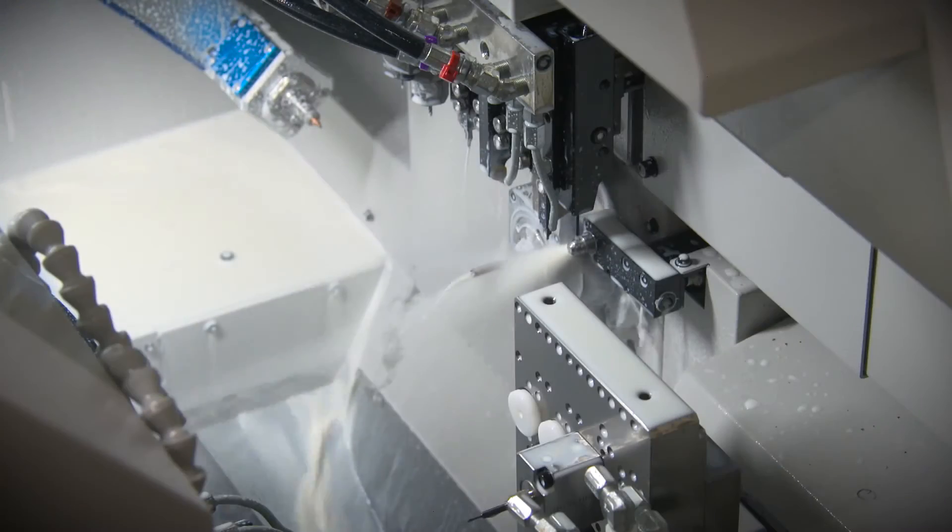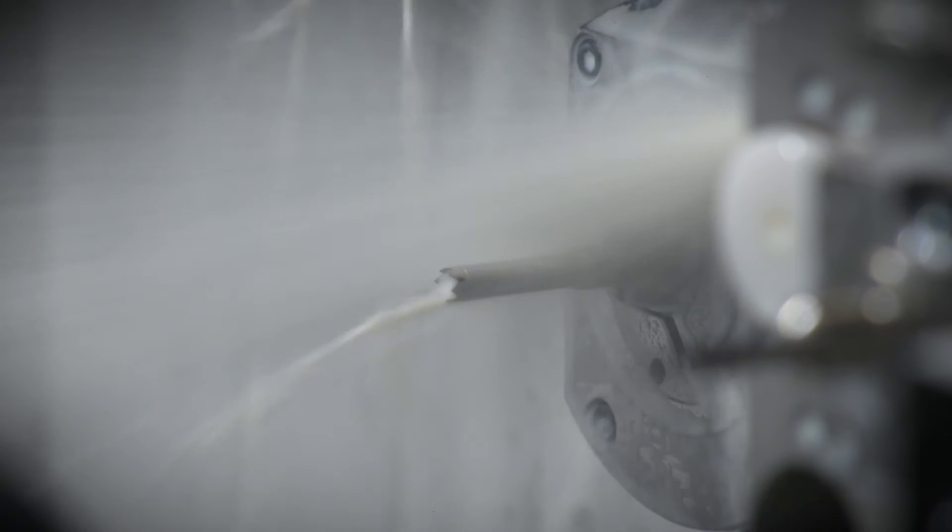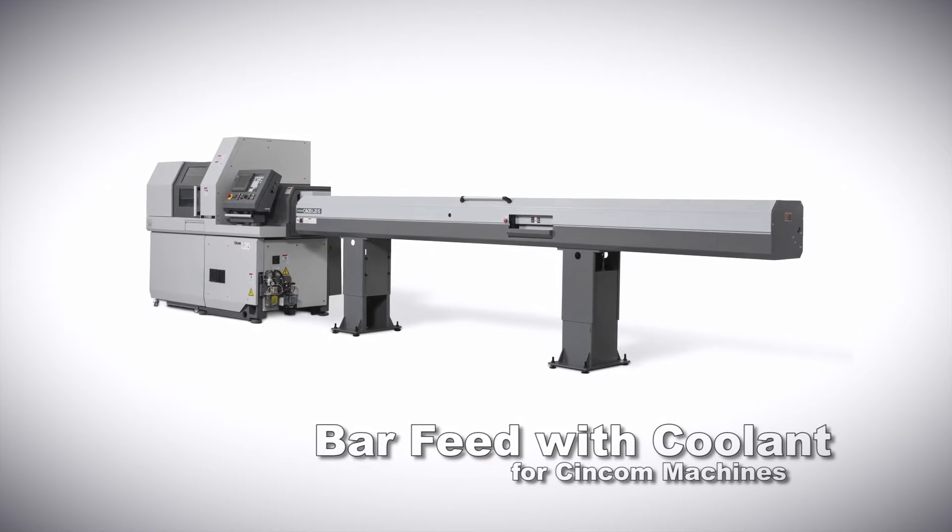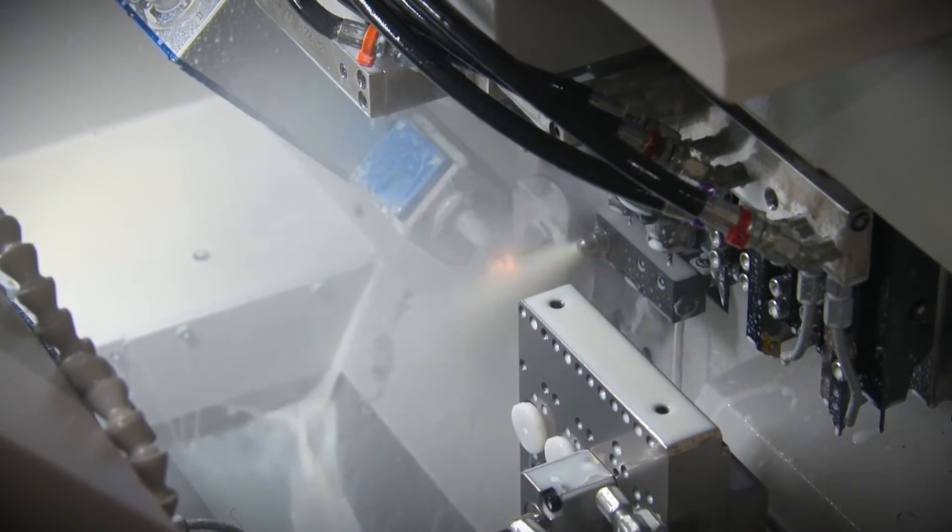High pressure coolant that is used during the cutting process also feeds coolant through the tubing material in the auto loading bar feed system. This provides a flushing of dross or chips that are created during the laser cutting process.